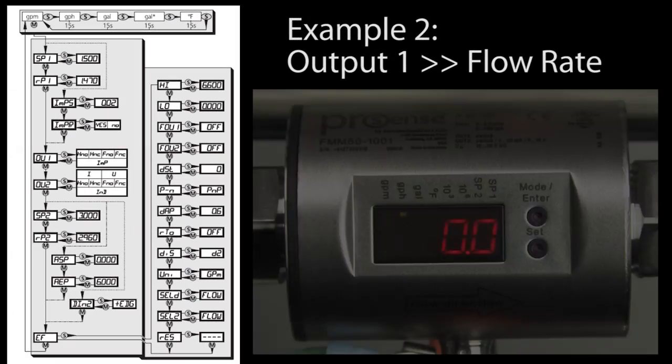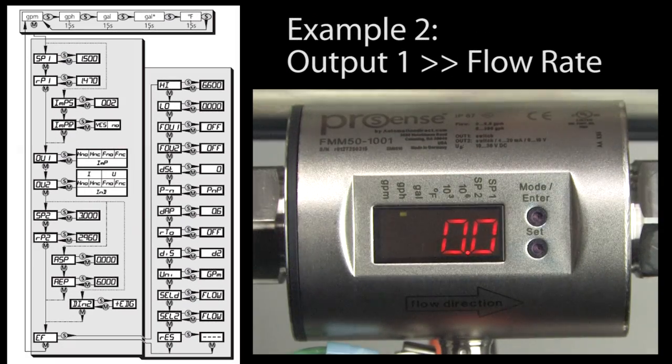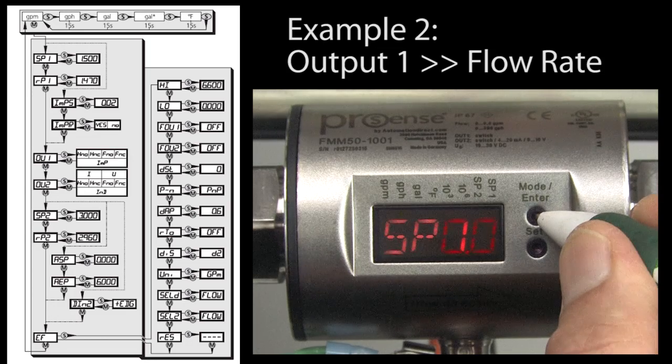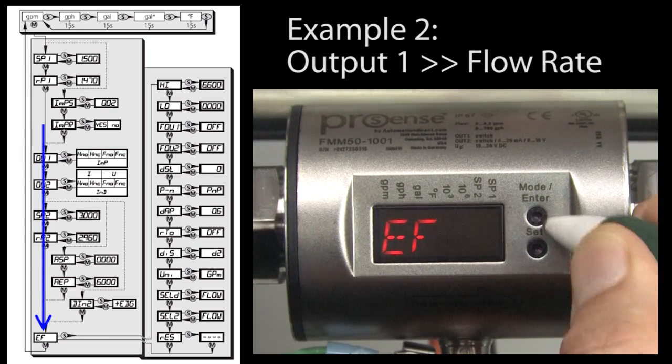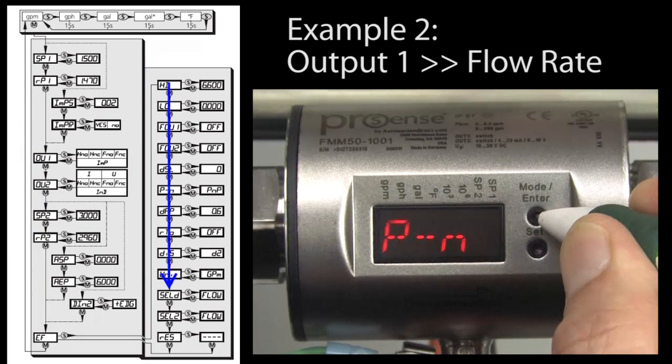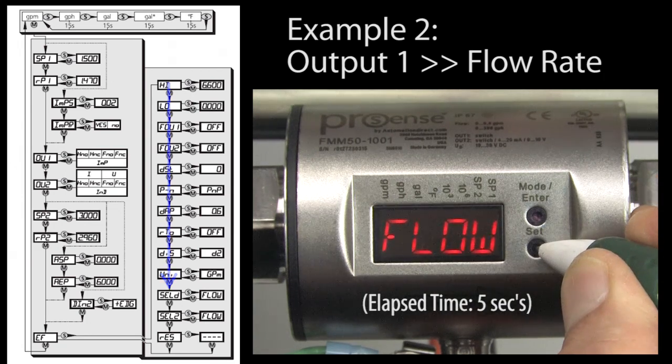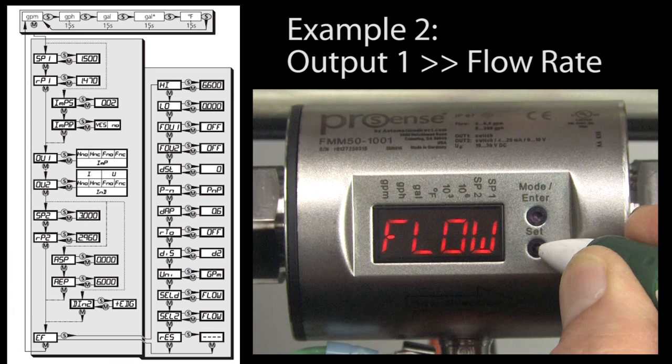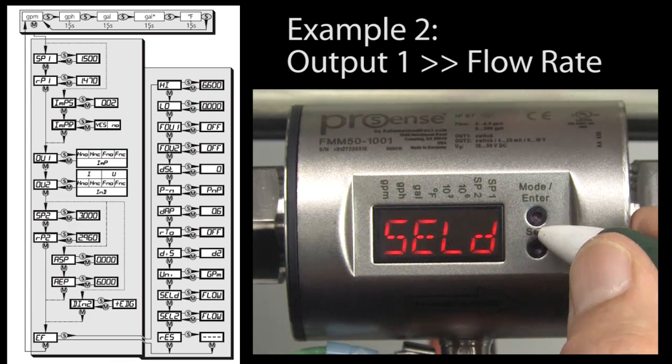Let's do another one. Let's set output 1 for flow rate monitoring. So we press the mode button to get to the extended functions menu and then SELD to select output 1's mode. Hold down select until it stops blinking and then cycle through the options until you get to flow and then press mode to accept.